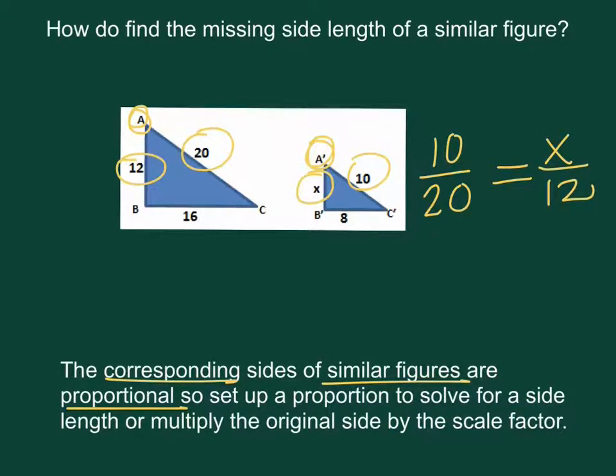So now we can reduce this, 1 to 2 equals x over 12, times 6 here, times 6 here, and we know the missing side length here is 6.